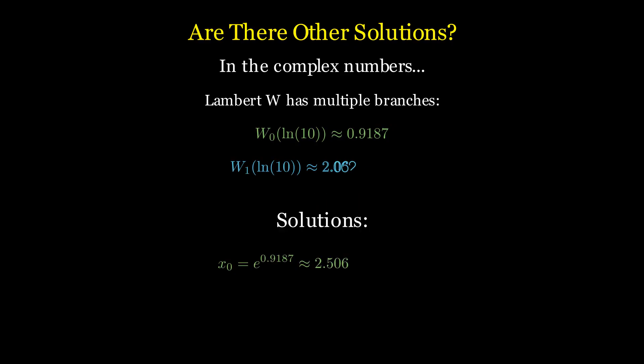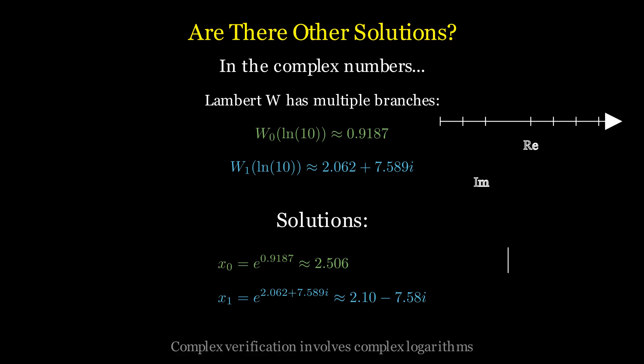Using another branch called W1, we find a complex value for the function. This leads to a complex solution for x, approximately 2.10 minus 7.58i. We can verify that this complex number to the power of itself indeed equals 10, but the calculation involves complex logarithms and exponentials. These solutions can be visualized as points on the complex plane.